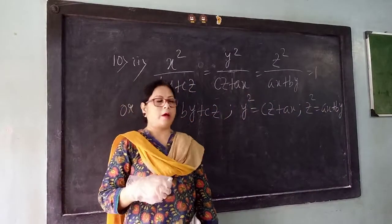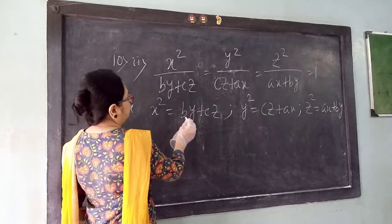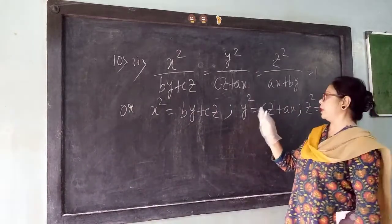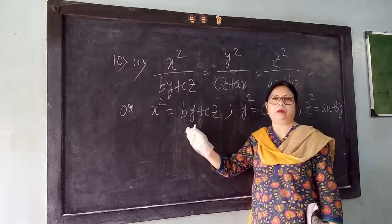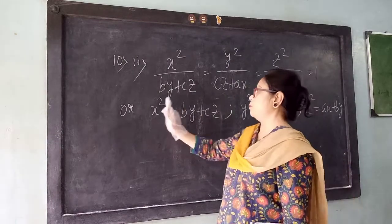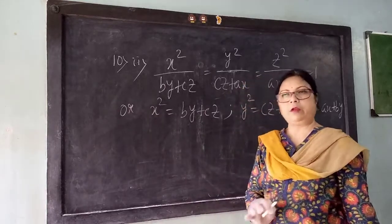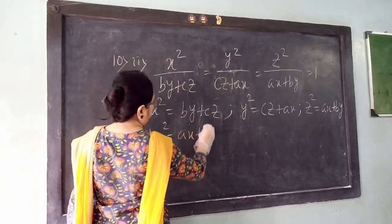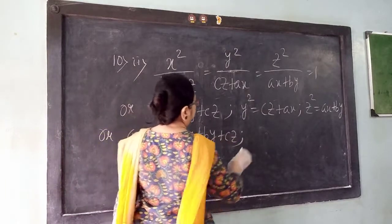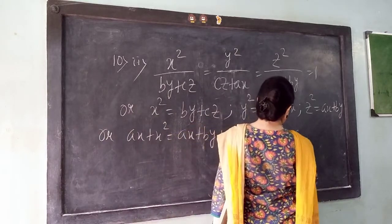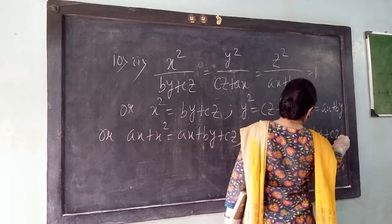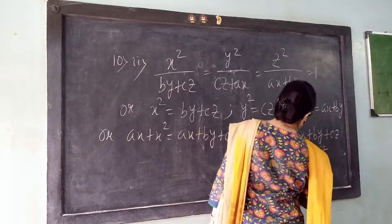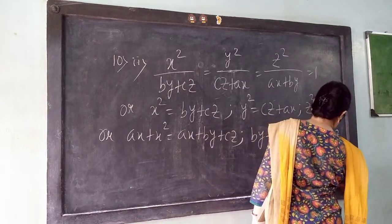In the last sum I told you that you have to make the right side equal. So here also, see — by Cz, if I add Ax here, if I add By here, if we add Cz, then you will get right hand side Ax plus By plus Cz. So when you add something with the right hand side, you have to add the same term with the left hand side also. Here I am adding Ax plus By plus Cz. Here adding By, right hand side also adding By. Here Cz — right hand side also adding By plus Cz.